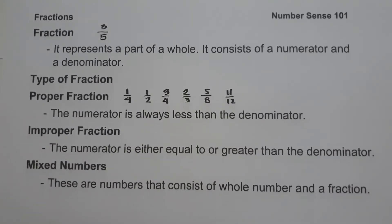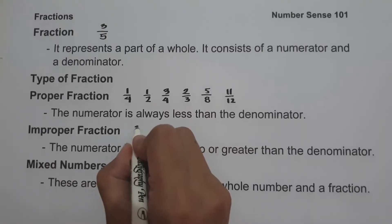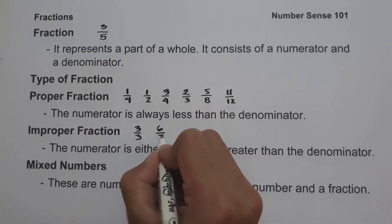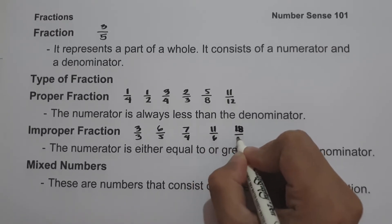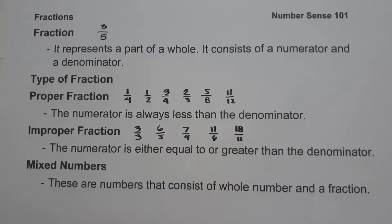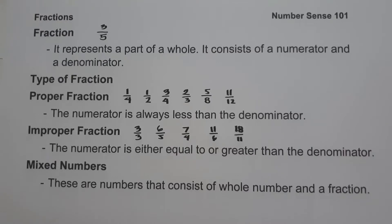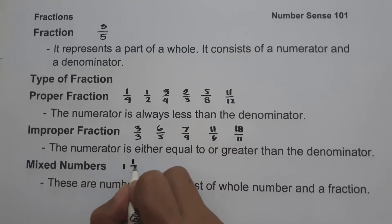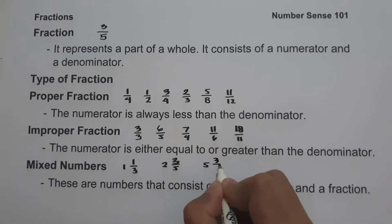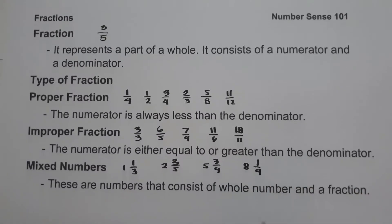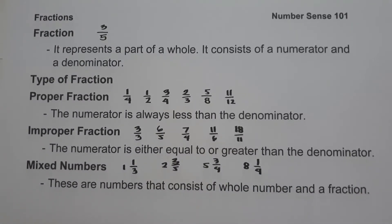When you say improper fraction, the numerator is either equal to or greater than the denominator. For example, 3 over 3, 6 over 5, 7 over 4, 11 over 6, and 18 over 11 are examples of improper fractions. And lastly, when you say mixed numbers, these are numbers consisting of a whole number and a fraction. For example, 1 and 1 third, 2 and 3 fifth, 5 and 3 fourth, and 8 and 1 fourth are examples of mixed numbers. Those are the basic concepts you need to remember to understand what fractions are.